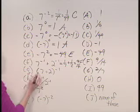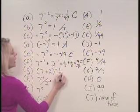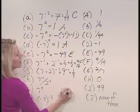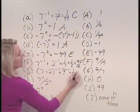For g, 7 plus 2 raised to the negative 1 is equal to 9 raised to the negative 1, which is 1 ninth, and that would be selection b.